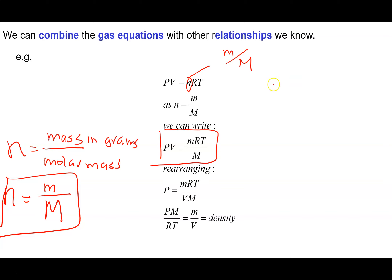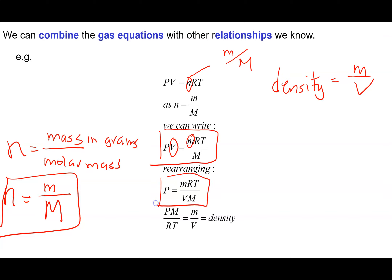We have another formula from week 1: density equals mass divided by volume. Looking at the expression with little m over big M in the ideal gas law, we have both mass and volume present. Dividing both sides by V, we get little m over V. Bringing everything to the left-hand side, we end up with: density equals pressure times molar mass divided by RT.